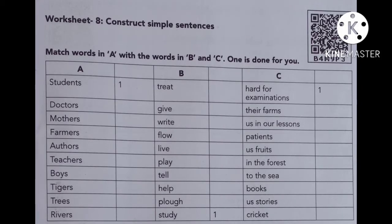Hello my dear students. Welcome to English Utkash class 9. Today we have to learn worksheet 8. In this worksheet we have to construct simple sentences. Some hints are given in column A, column B, and column C. Taking the words from three columns we can make simple sentences. Match words in A with words in B and C. One example is given below.